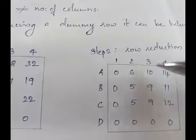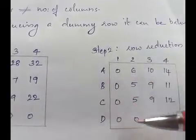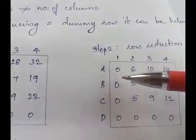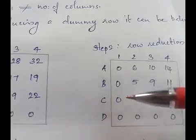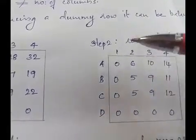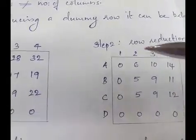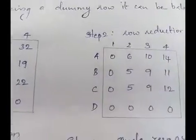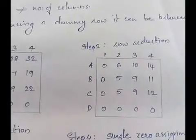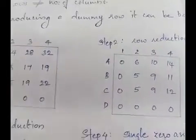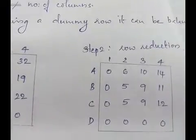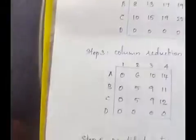Once row reduction is done, we perform column reduction — reducing each element of the column by the smallest element in that column. Since we already have zeros in each column, the table remains unchanged after column reduction. So we have the same table after column reduction for this question.